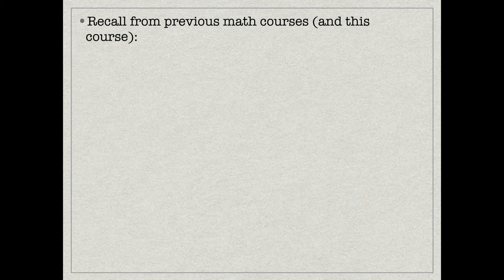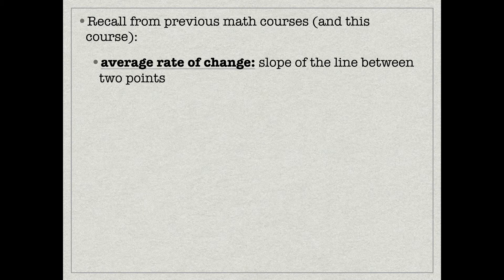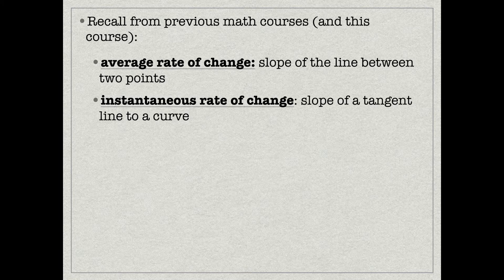A couple of things from previous math courses that we need to remember. Number one, if we're talking about the average rate of change, that's really just the slope of a line between two points anywhere on a graph. Number two, if we're talking about the instantaneous rate of change, then we're talking about the slope of a tangent line to that curve. I'll do a little example to show you the difference.